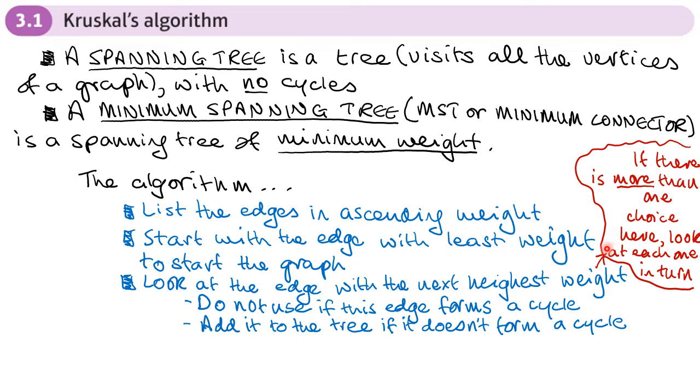Don't just reject it outright because they're both the same. Choose one, see what it does. You might find that after choosing that one, you get a cycle at some point, so you have to go back and choose the other one. The last step is to repeat this previous step until all the vertices are connected and we have our minimum spanning tree.